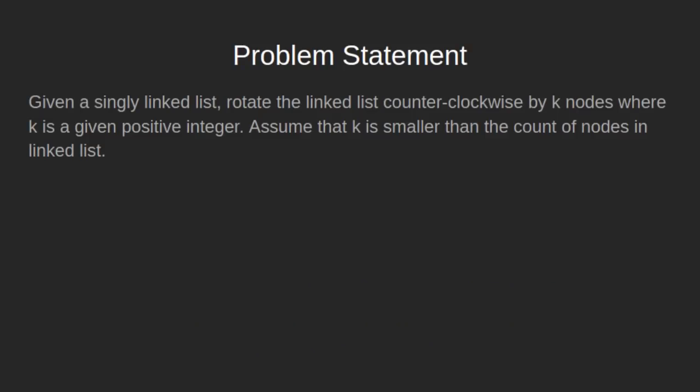Let's see the problem statement first. Given a singly linked list, we need to rotate the linked list counter-clockwise by k nodes, where k is a given positive integer. Assume that k is smaller than the count of nodes in the linked list.